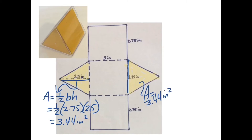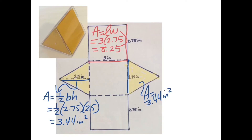Now we need to find the area of each lateral side — the ones that are not the bases. Each rectangle is 3 by 2.75, so three times 2.75 gives an area of 8.25 square inches. This one is also 3 times 2.75. They're not always the same, so you need to check your dimensions — but here it's another 8.25 square inches.